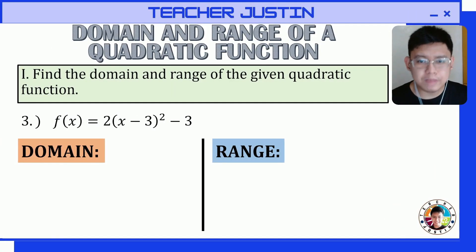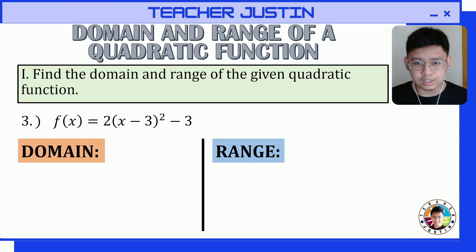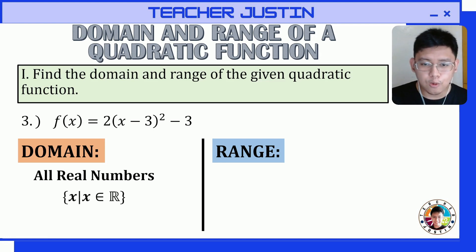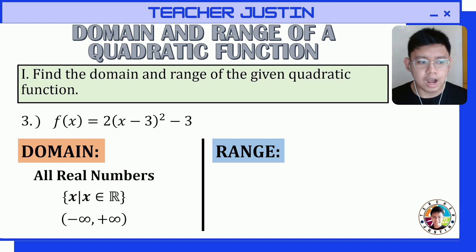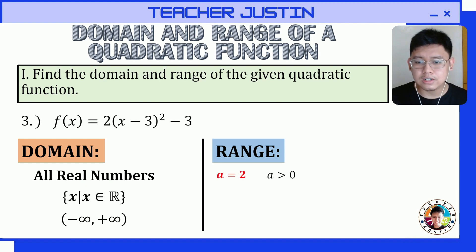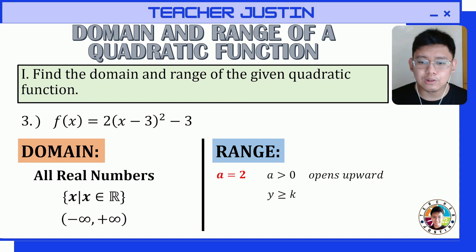Let's find the domain and the range of f(x) = 2(x-3)² - 3. The domain will be all real numbers: x such that x is an element of all real numbers, or in interval form from negative infinity to positive infinity. For the range, we determine the orientation by getting the value of a and comparing it to 0. Our a equals 2, which is greater than 0, so the parabola opens upward, and y will be greater than or equal to k.